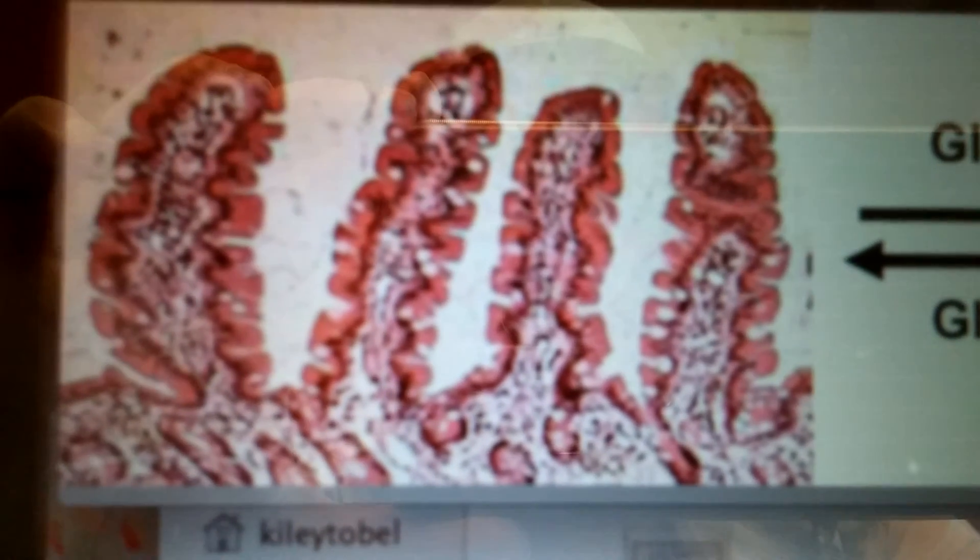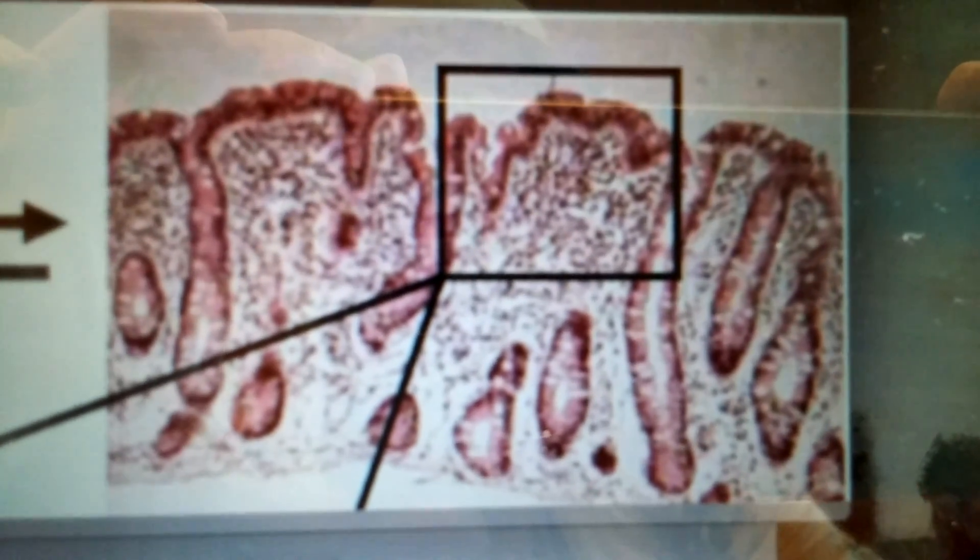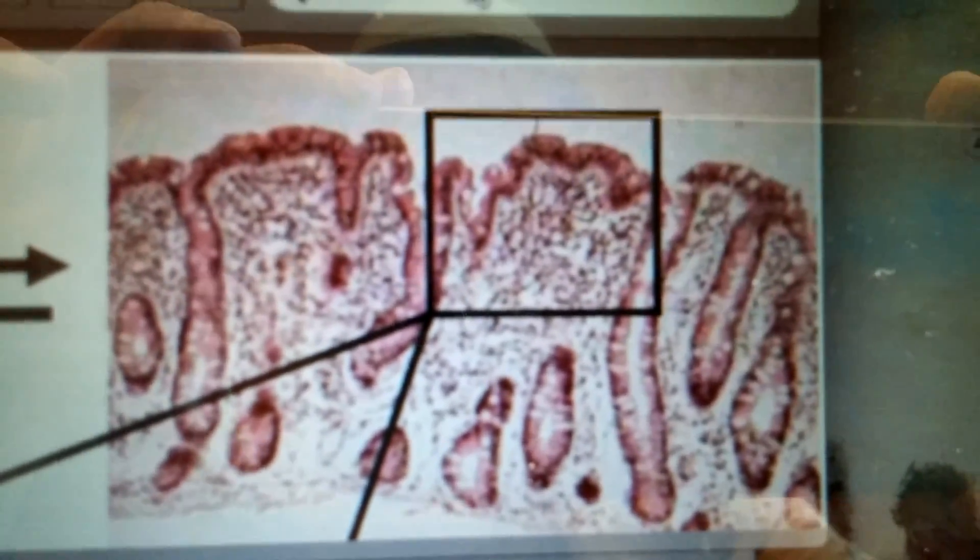Normal crypts. Crypt hyperplasia from gluten. Malabsorption.